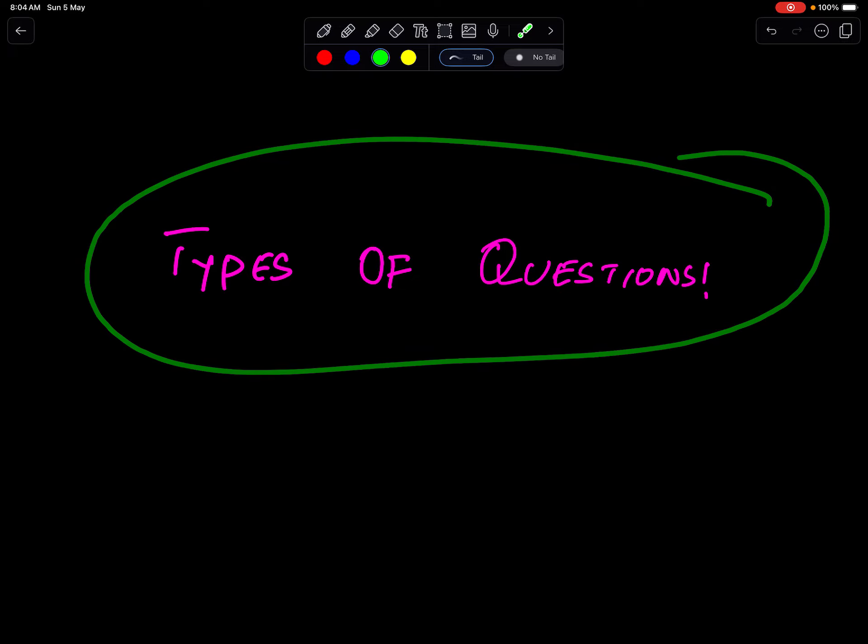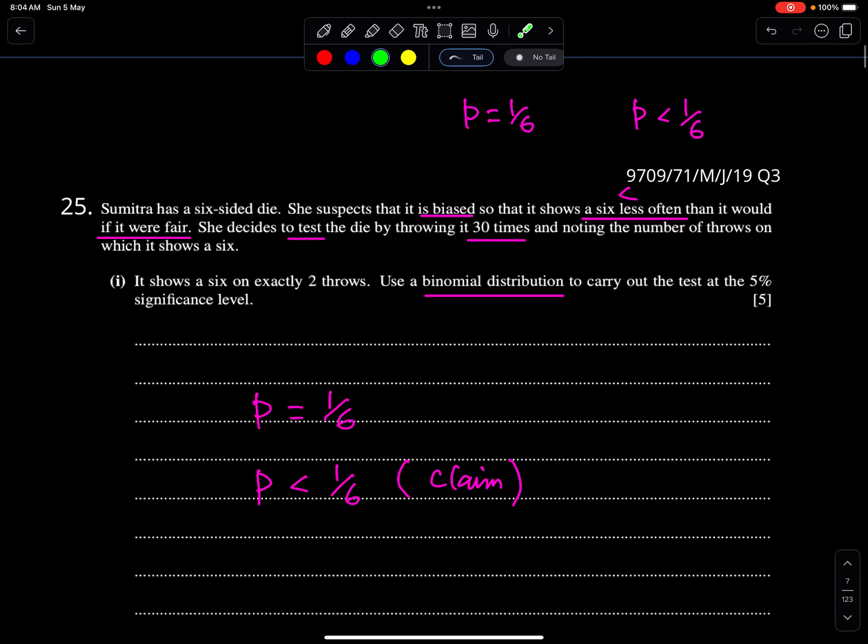Types of questions in testing of hypothesis. This question is from June 19, question 3, paper 71. Sumrita has a six-sided die. She suspects that it is biased so that it shows a six less often than it would if it were fair. If the die was fair, the probability of number six would be 1/6. But she suspects that it is biased and it shows a six less often, meaning the probability of six is less than 1/6. This is the claim we want to test.